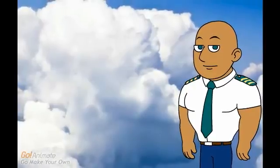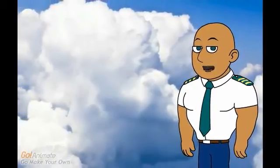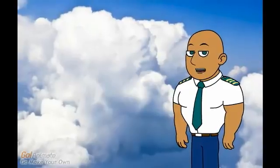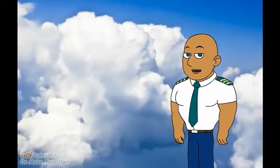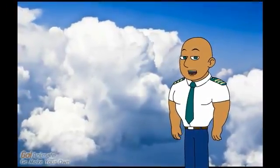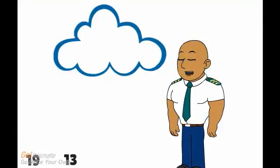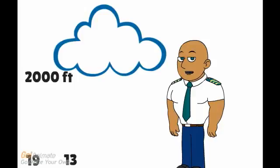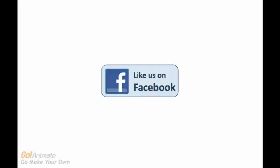Let us take a look at an example. The surface temperature is 19 degrees and the dew point temperature is 13 degrees Celsius. The dry adiabatic lapse rate is 3 degrees per 1000 feet. We use the following formula: 19 minus 13 divided by 3 makes 2. Then we multiply the result by 1000. Given these conditions, the cloud base will be around 2000 feet.